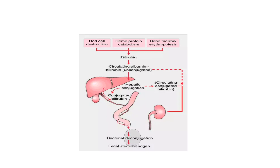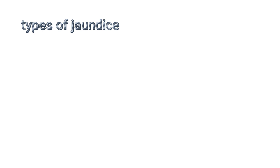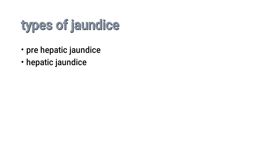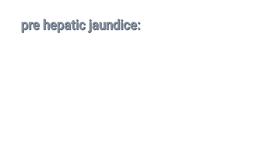The bacteria convert conjugated bilirubin into stercobilin, and some of it is absorbed and excreted via the kidneys. Now let's talk about the types of jaundice: pre-hepatic, hepatic, and post-hepatic.